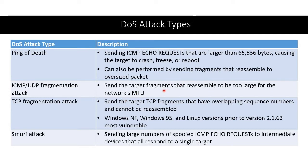The fragments reassemble to be too big, or a very common TCP issue is that the pieces overlap and can't be reassembled properly. The CPU goes crazy wasting a lot of time trying to reassemble pieces that could never go back together. The earlier versions of Windows and Linux were most susceptible to this type of TCP fragmentation attack.